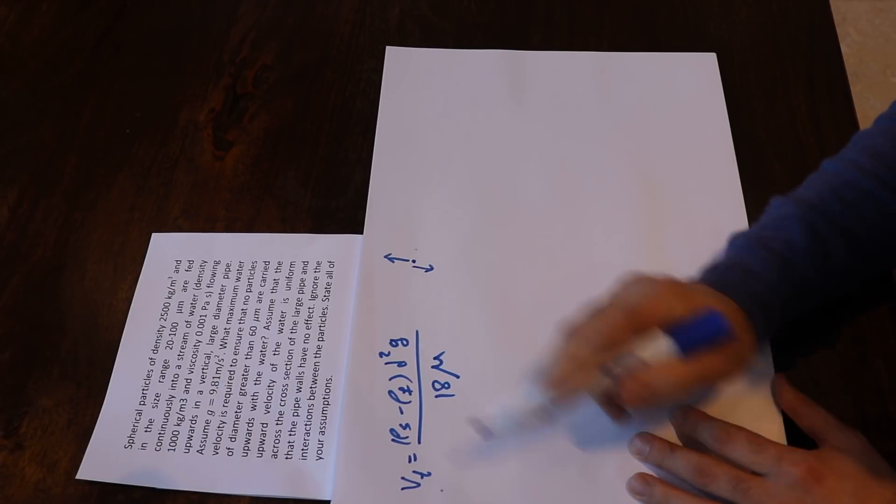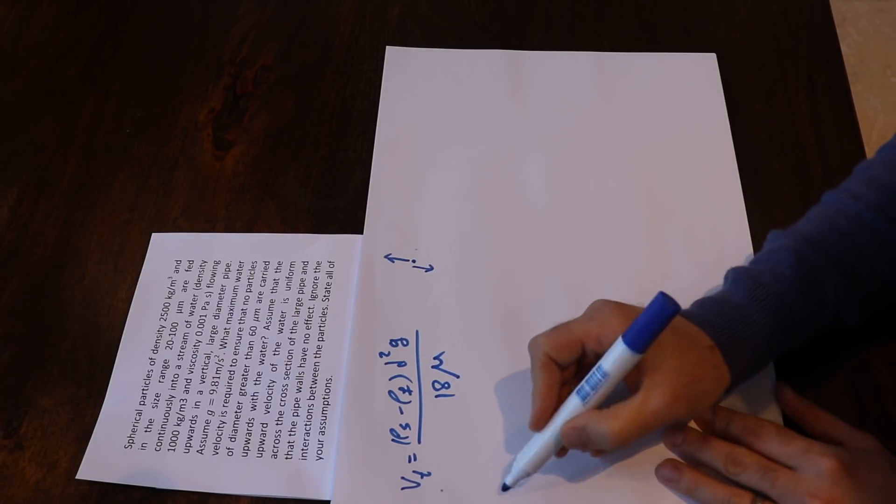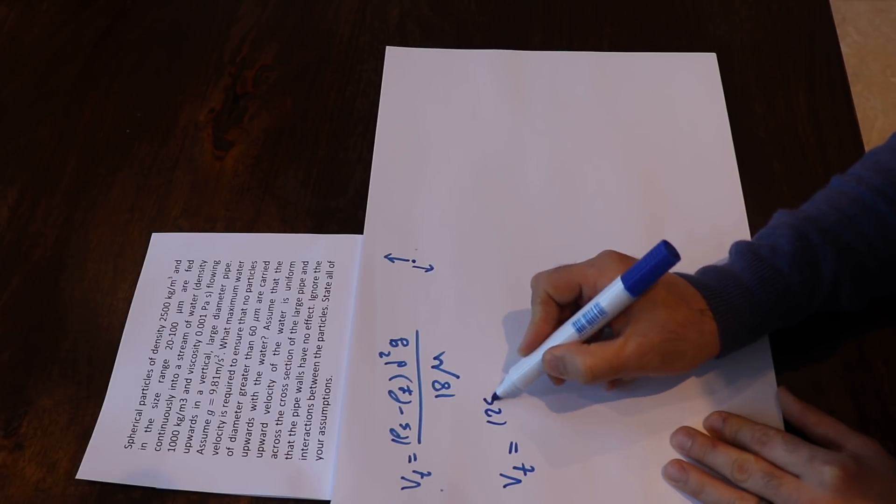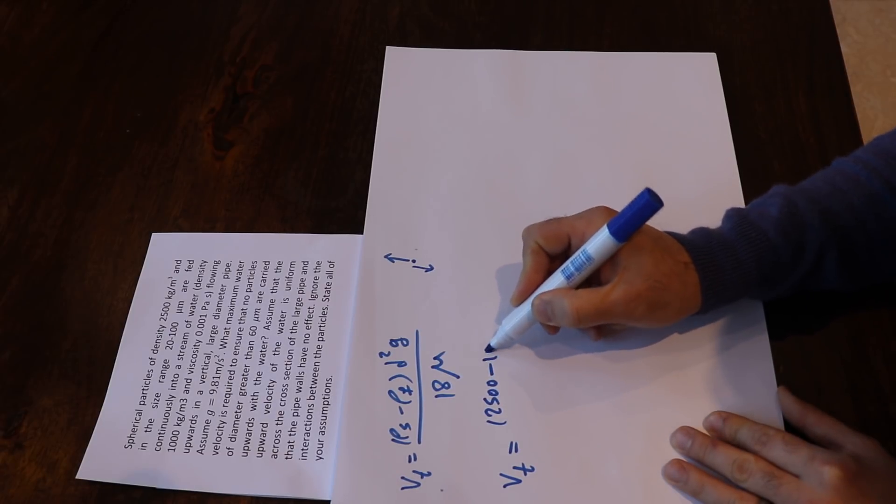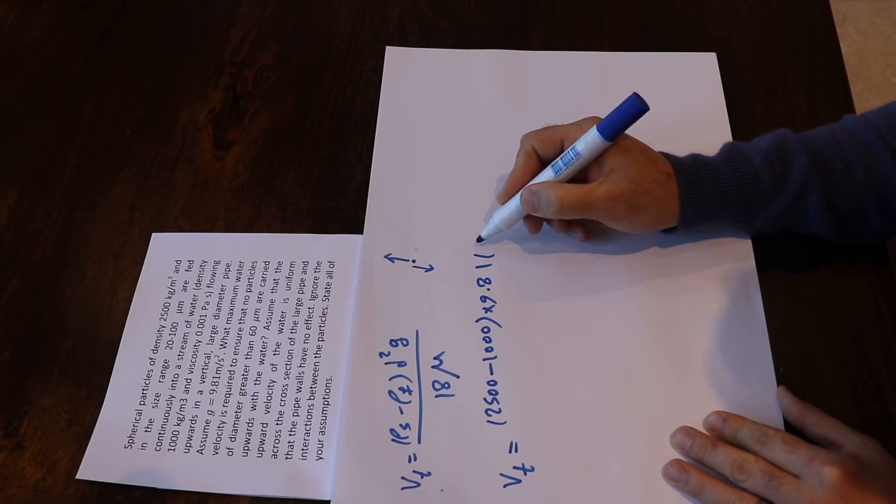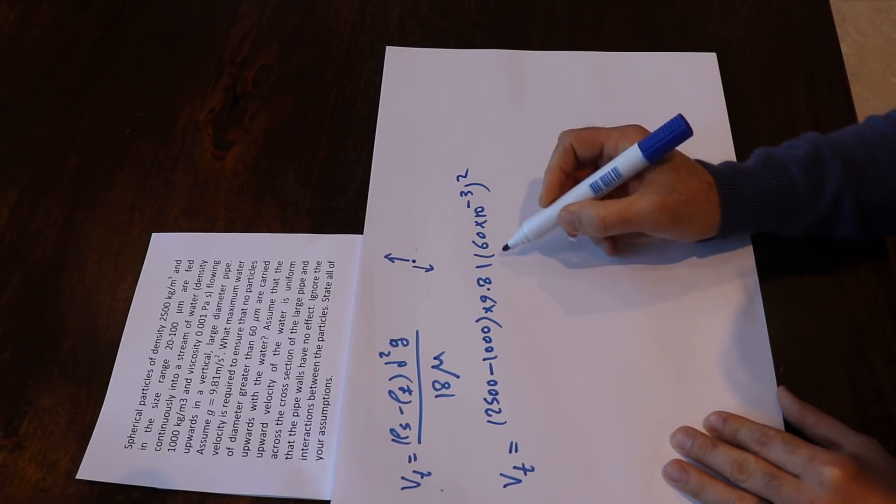Okay, so you have all these parameters now and I'll just plug in the parameter values to calculate the terminal velocity: vt = (2500 - 1000) × 9.81 × (60 × 10^-3)²